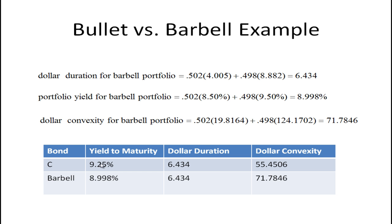The bullet strategy has a yield of 9.25%, dollar duration of 6.434, and dollar convexity of 55.4506. The barbell strategy has a lower yield to maturity, the same dollar duration, but a higher convexity. Convexity is a good thing: when interest rates go up, the bond price goes down at a slower rate, and when rates go down, the price goes up faster. But there's a cost — to produce a portfolio with more convexity, you have to settle for a lower yield.